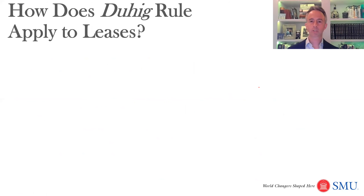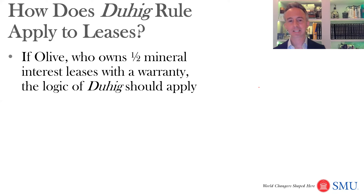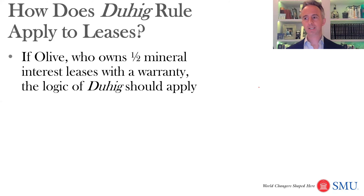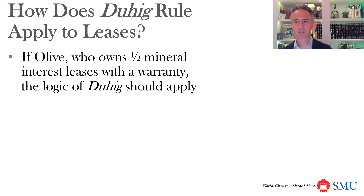One application of the proportionate reduction clause is when we might otherwise think the Duhig rule would apply. Imagine that Olive owns a one-half mineral interest and leases as though she has the full mineral interest, even though she only has the one-half. And she leases with a warranty. In theory you would think Duhig should apply, but if you think about what would happen under Duhig, the result would get really harsh.